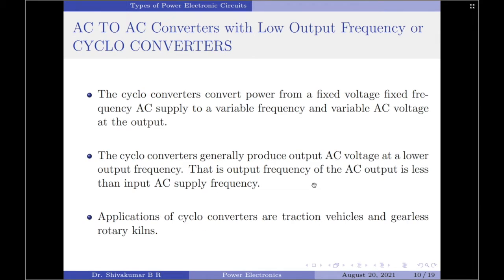Cycloconverters are also AC to AC converters, but the output voltage frequency here is lesser than the input voltage frequency. Apart from that particular variation, the operation is essentially unchanged. However, because the output frequency is less than the input frequency, cycloconverters are usually used for low-frequency applications such as traction vehicles and gearless rotary kilns.